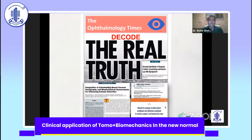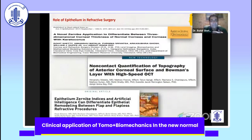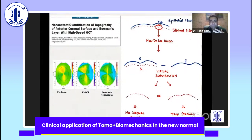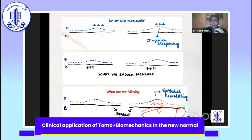We started looking at the real truth — where is it really leading to? Instead of just thinking about biomechanics in mathematical terms, I looked at multiple domains. One very important thing to understand the whole biomechanics measurement is to understand a little bit about epithelium. This is from some of our papers where we spoke about how epithelium can actually mask and unmask your cornea. Epithelium understanding is very important because biomechanics is actually measuring the stroma, not the epithelium.